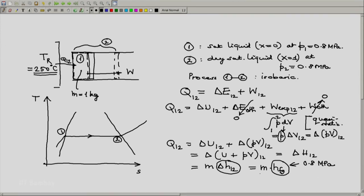So this will be M into HFG, where HFG is to be evaluated at 0.8 megapascal. We are given that M is 1 kilogram, HFG is read off, and hence we can determine Q12. That is one part of the solution.